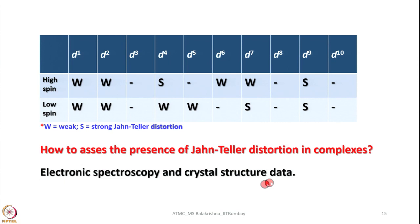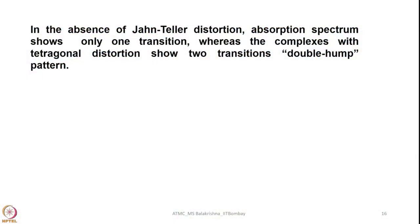But how do we assess the presence of Jahn-Teller distortion in complexes? Two important aspects are electronic spectroscopy and crystal structure data. Crystal structure data is quite straightforward — the moment you determine the X-ray structure you will come across variations in bond lengths that tell you whether elongation or compression is observed. In the absence of Jahn-Teller distortion the absorption spectrum shows only one transition, whereas complexes with tetragonal distortion usually show two transitions, which we call the double hump pattern.